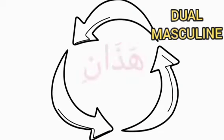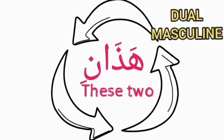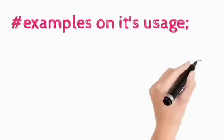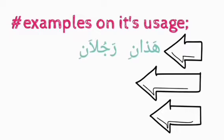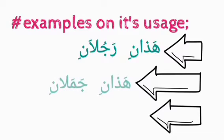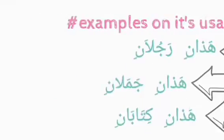For hazaani, it simply means 'these two'. Examples on how you can make use of hazaani: hazaani rojulun — these are two men; hazaani jamalani — these are two camels; hazaani kitabani — these are two books.